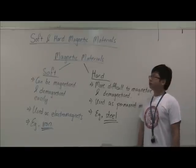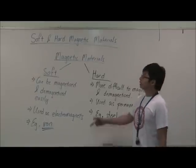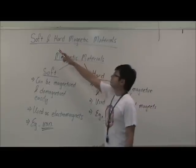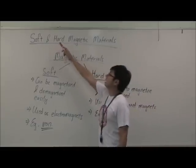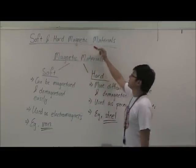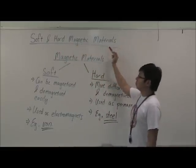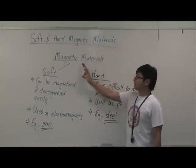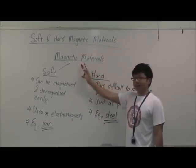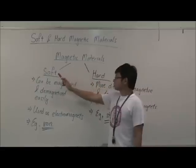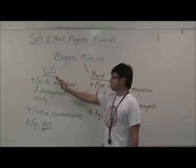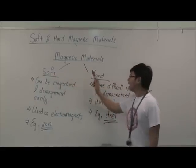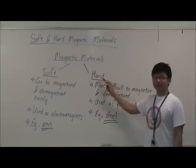Hi, I'm Mr. Omio. Now let's look at soft and hard magnetic materials. Magnetic materials can be classified under soft magnetic materials or hard magnetic materials.